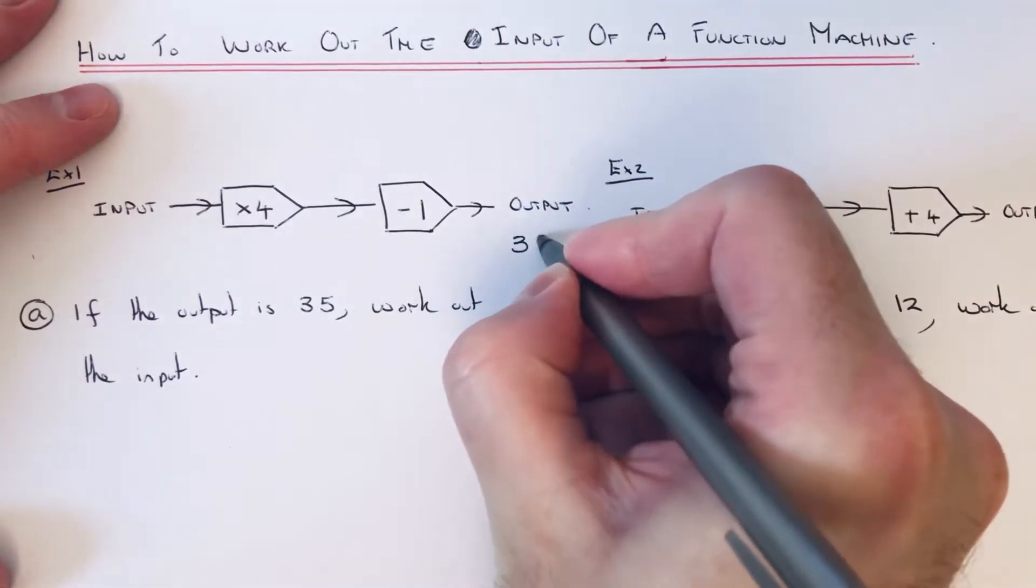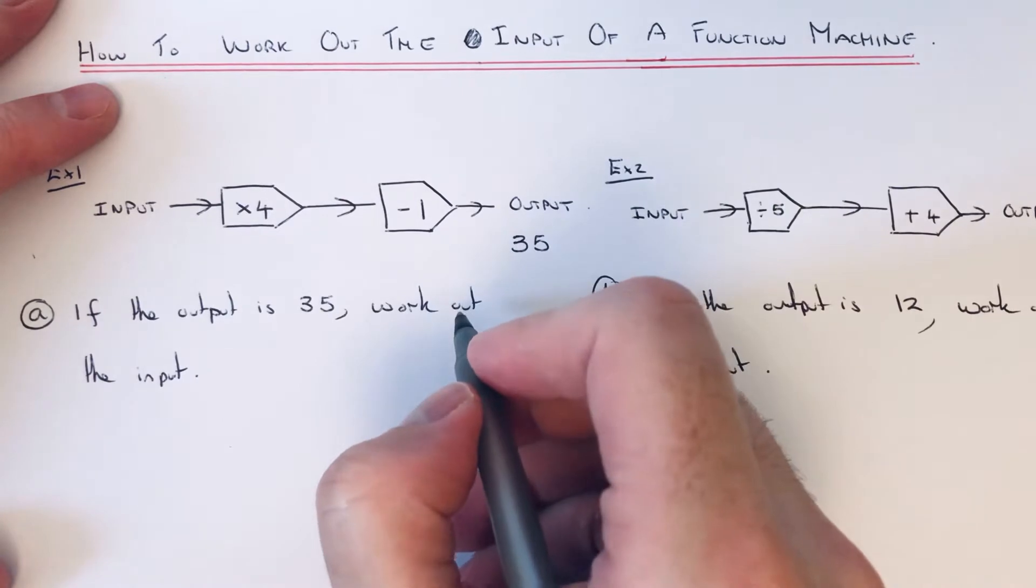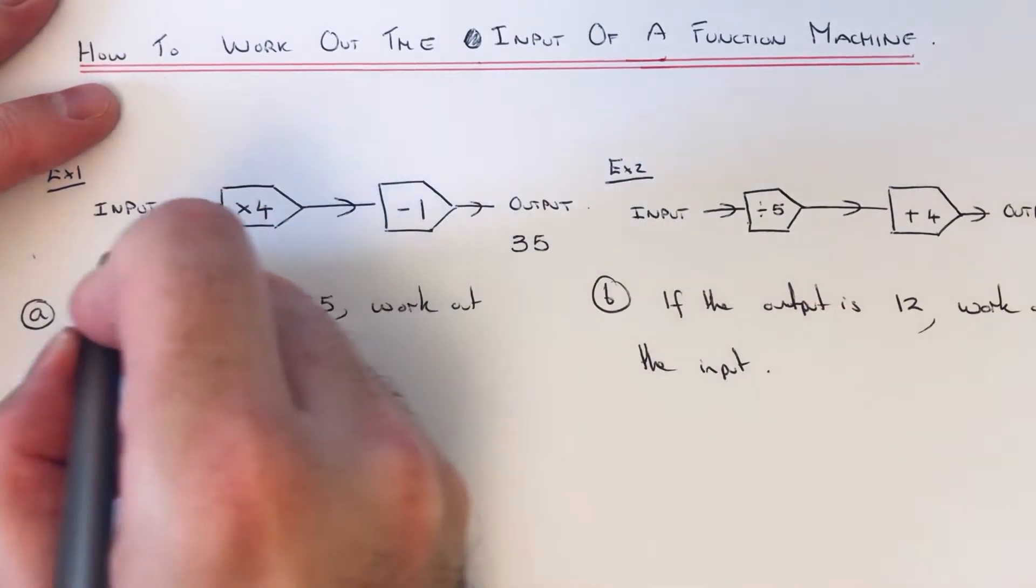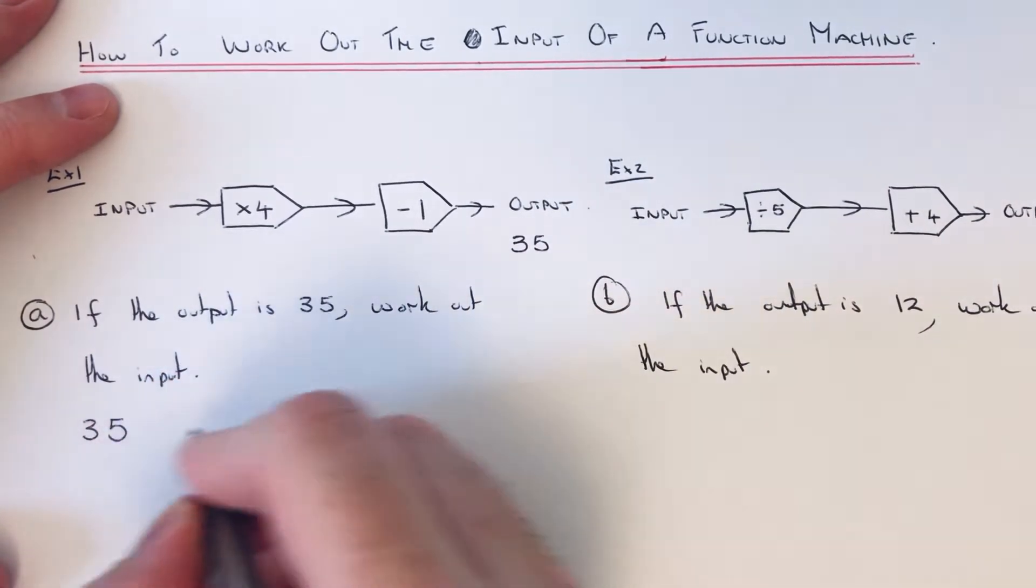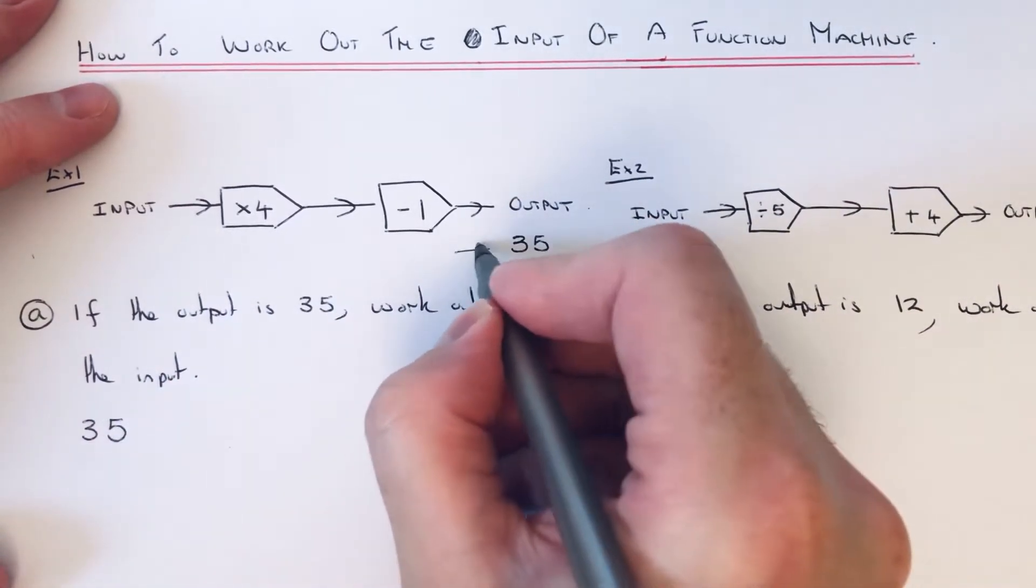We've got the output which is 35, and we've got to work our way backwards to find the input. So let's write the 35 down. First of all, we need to do the opposite to minus 1.